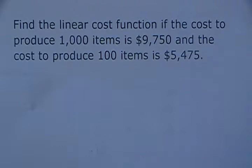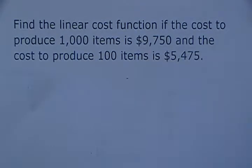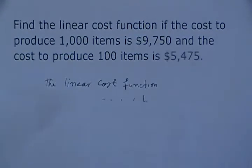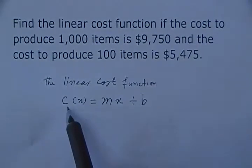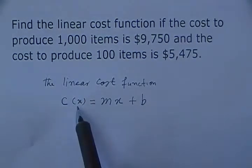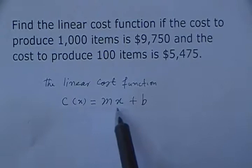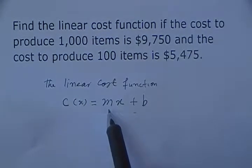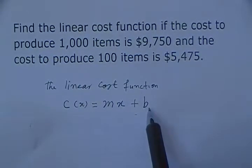First of all, let's write the general form of the linear cost function. C of x is the total cost to produce x items. That's equal to mx plus b, where m is per item cost or marginal cost and b is the fixed cost.